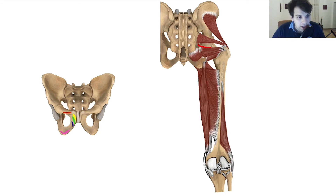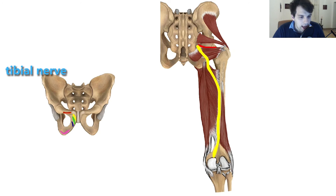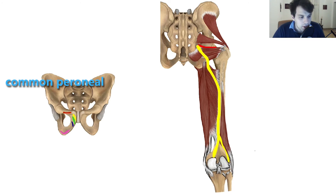Do you remember when I mentioned the inferior gluteal artery coming under the piriformis muscle? Well, there is also one more structure coming under the piriformis muscle, and that is from the lumbar and the sacral plexus, L4 to S3 — the very thick sciatic nerve. It runs down and gets split into the tibial and the common peroneal nerve. The common peroneal nerve branches supply the short head of the biceps femoris, and the tibial nerve branches supply all the other muscles.